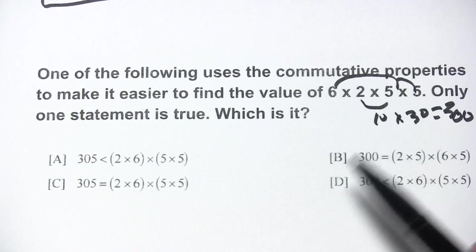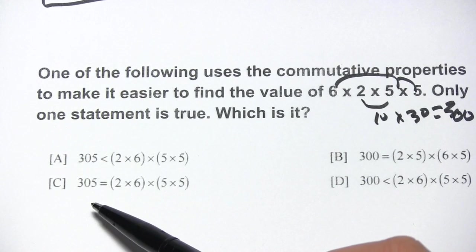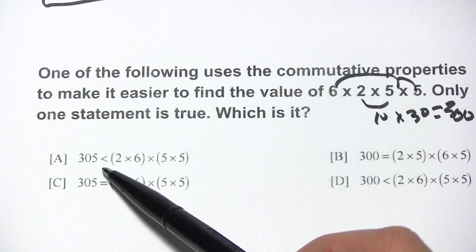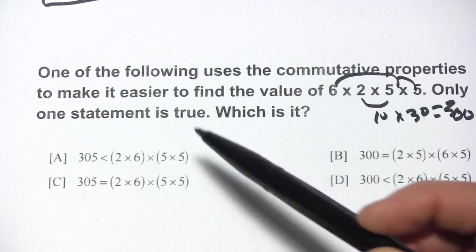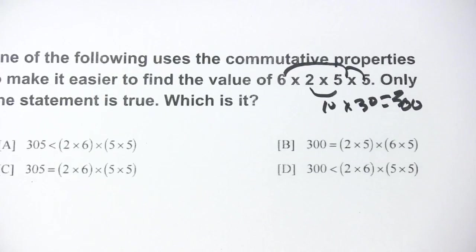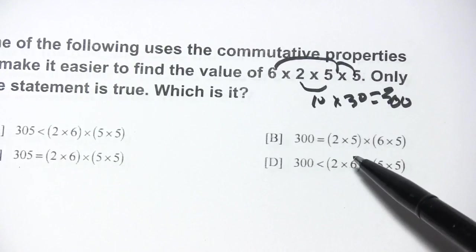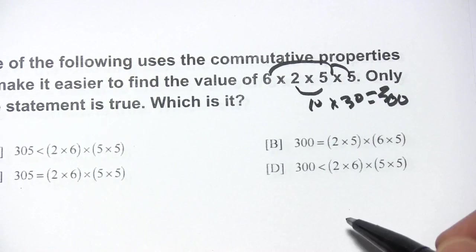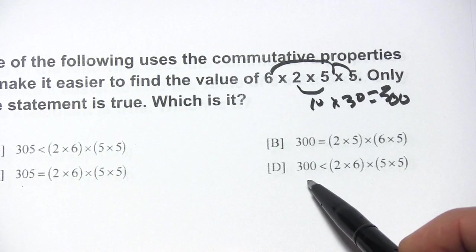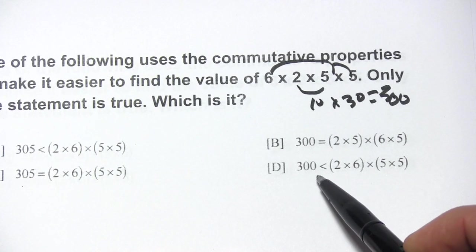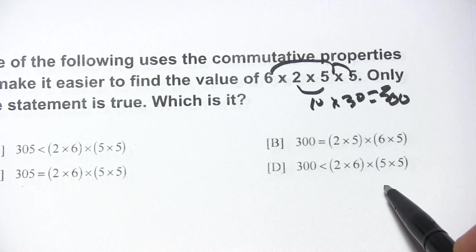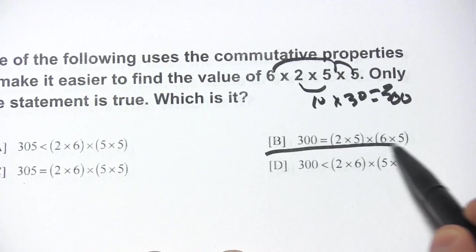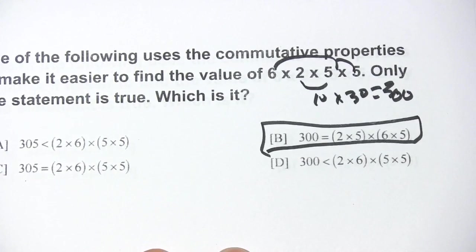Looking at the answer choices, two of them say it comes out to three hundred and five — that answer is wrong. One says less than, which also seems off. One says less than three hundred — that's not true either. This actually equals three hundred, so it has to be the answer choice showing it equals three hundred.